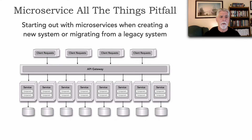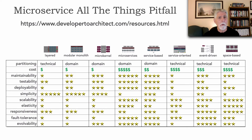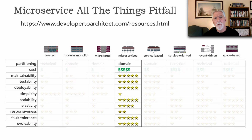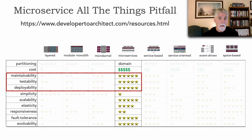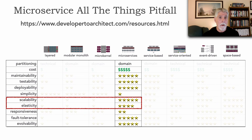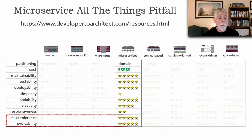Starting out with microservices when creating a new system from scratch or migrating — let's take a look at the superpowers of microservices. If we look at why we usually choose microservices, it has five stars — the best — for maintainability, testability, and deployability. Those aspects of agility and the ability to respond quickly to change also have very high ratings: five stars and four stars for scalability and elasticity. Finally, fault tolerance and evolvability also both have five stars. These are microservices superpowers.